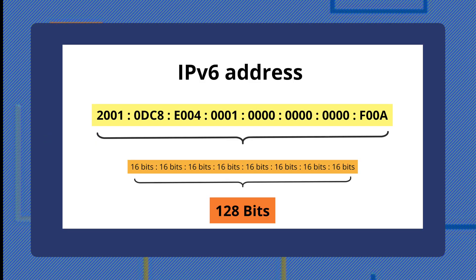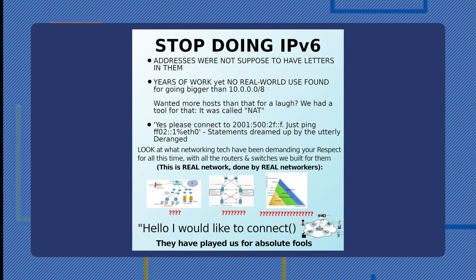IPv6 uses a hexadecimal notation, which means we get integers and the letters A through F to represent 16 values instead of the normal 10 we get with 0 through 9. These values are separated by colons, making this a 128-bit address, and we won't run out of these in our lifetime.